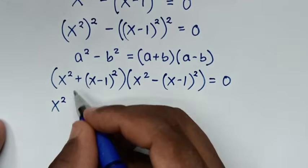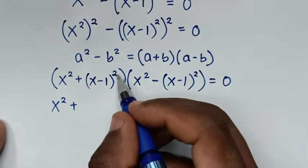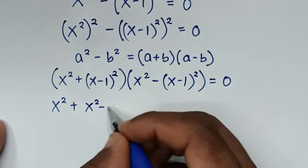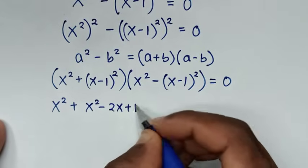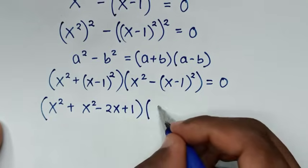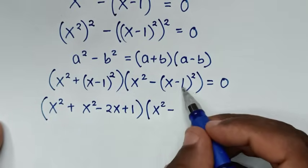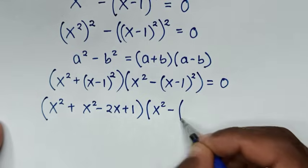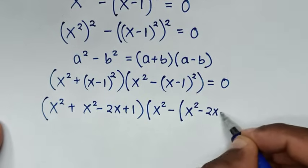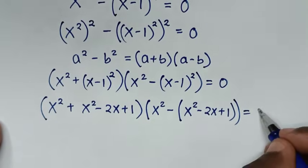In the next step, we expand x minus 1 bracket squared as x squared minus 2x plus 1 in both factors. So it becomes x squared plus x squared minus 2x plus 1, times x squared minus x squared minus 2x plus 1, equal to 0.